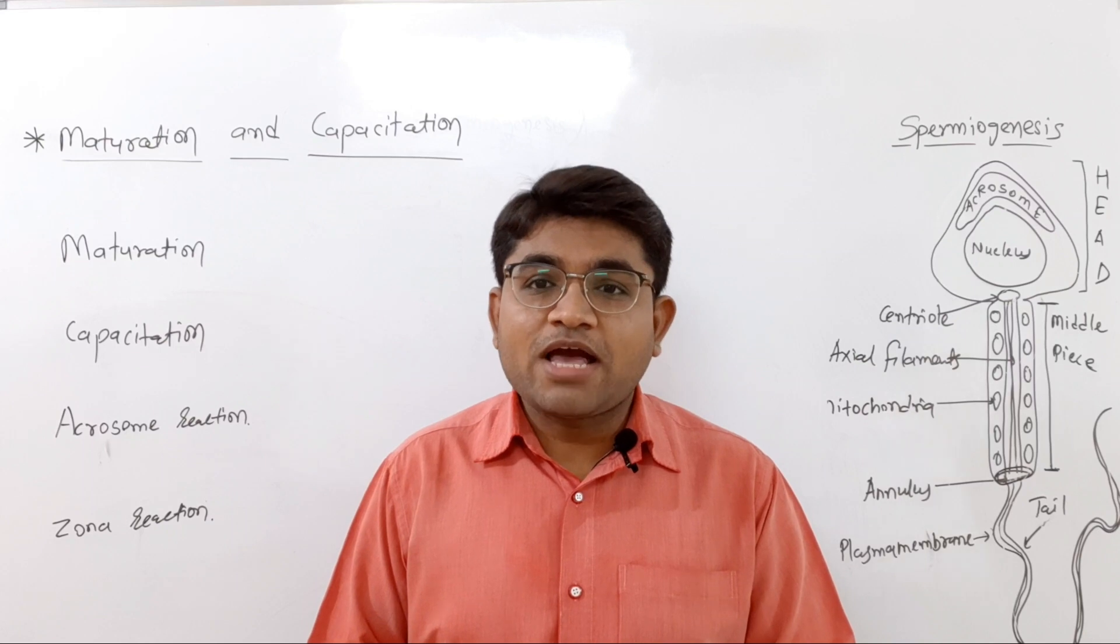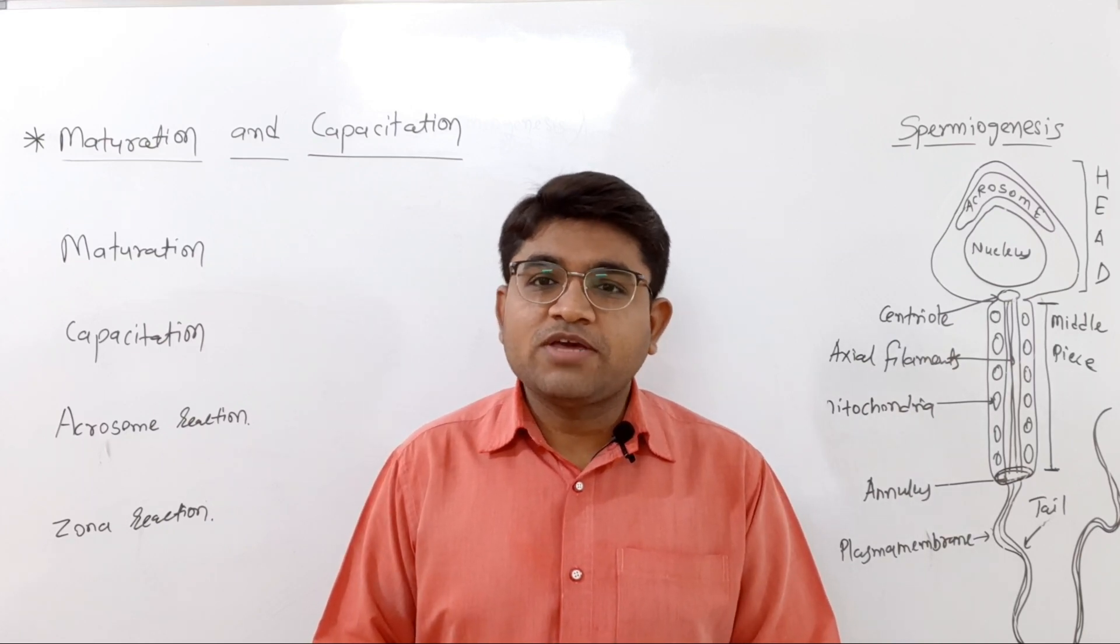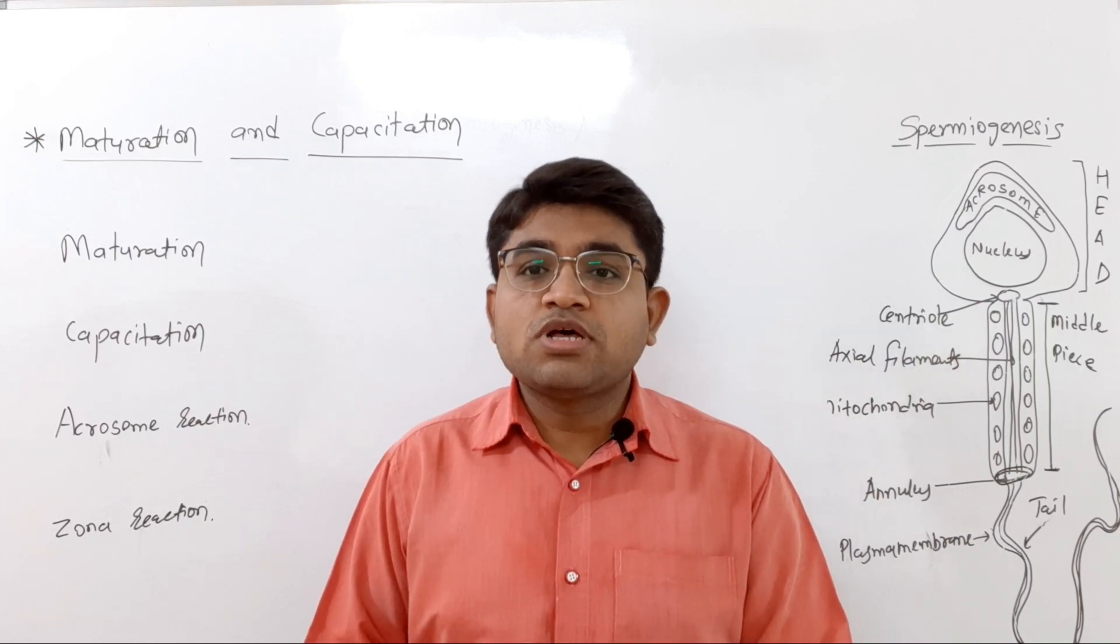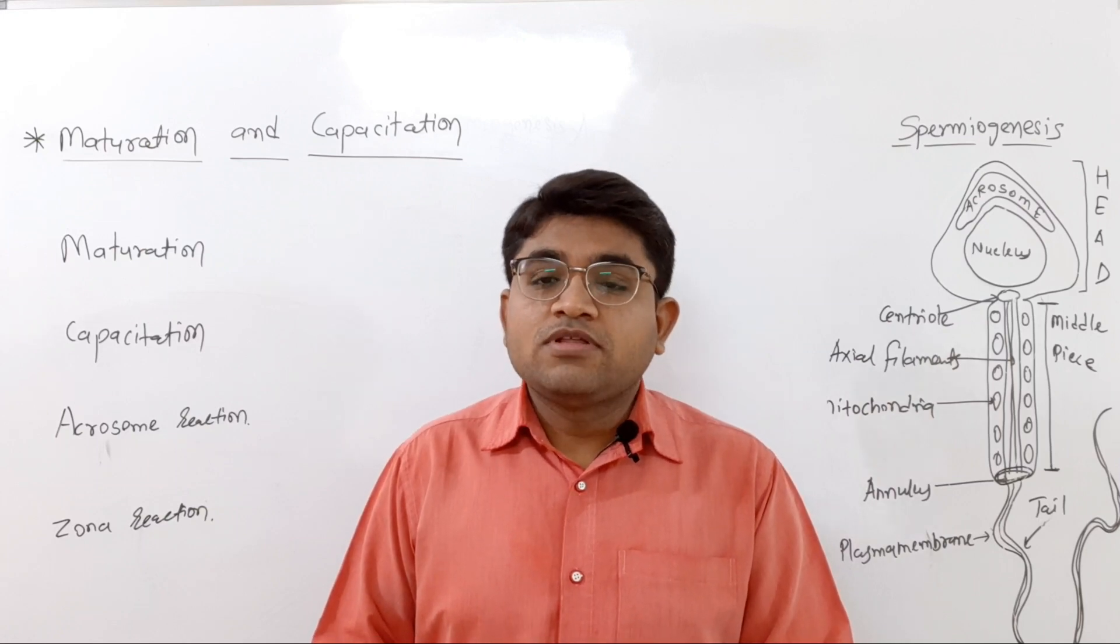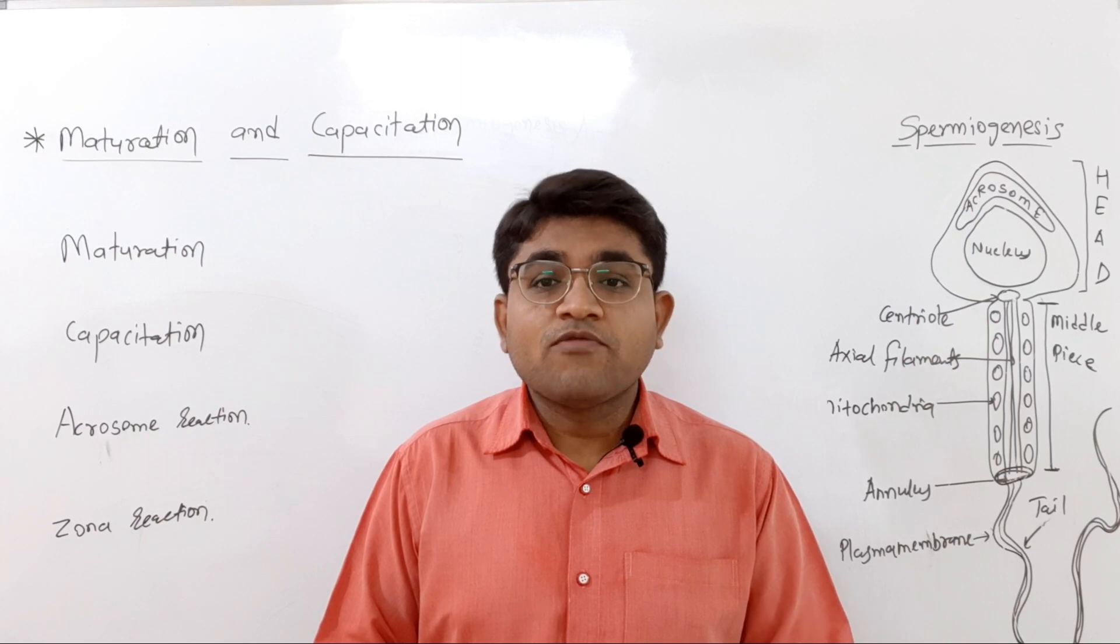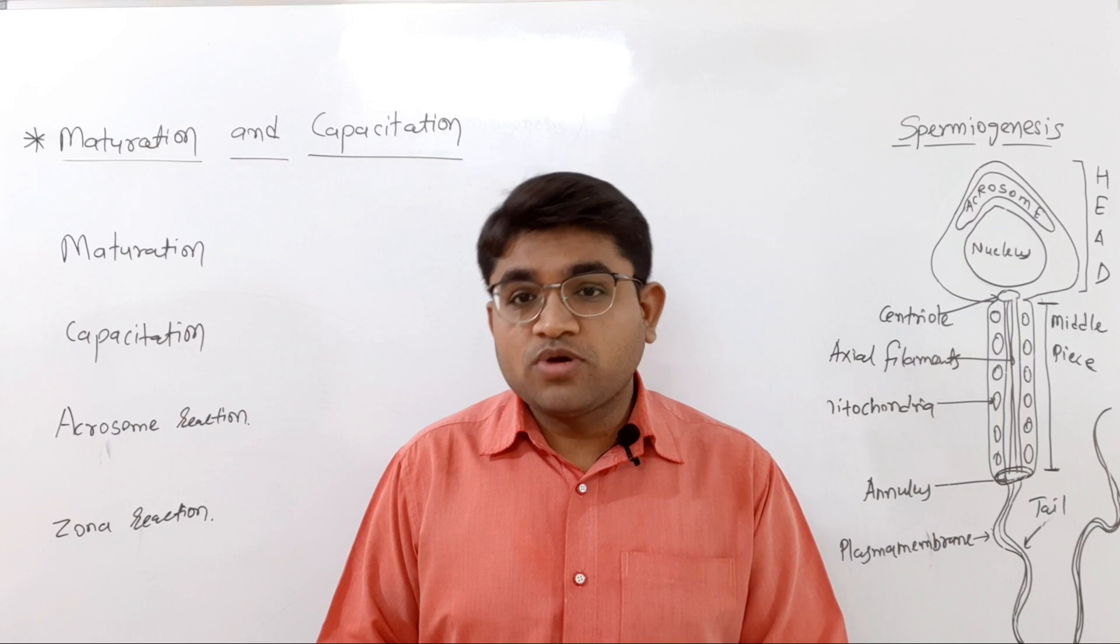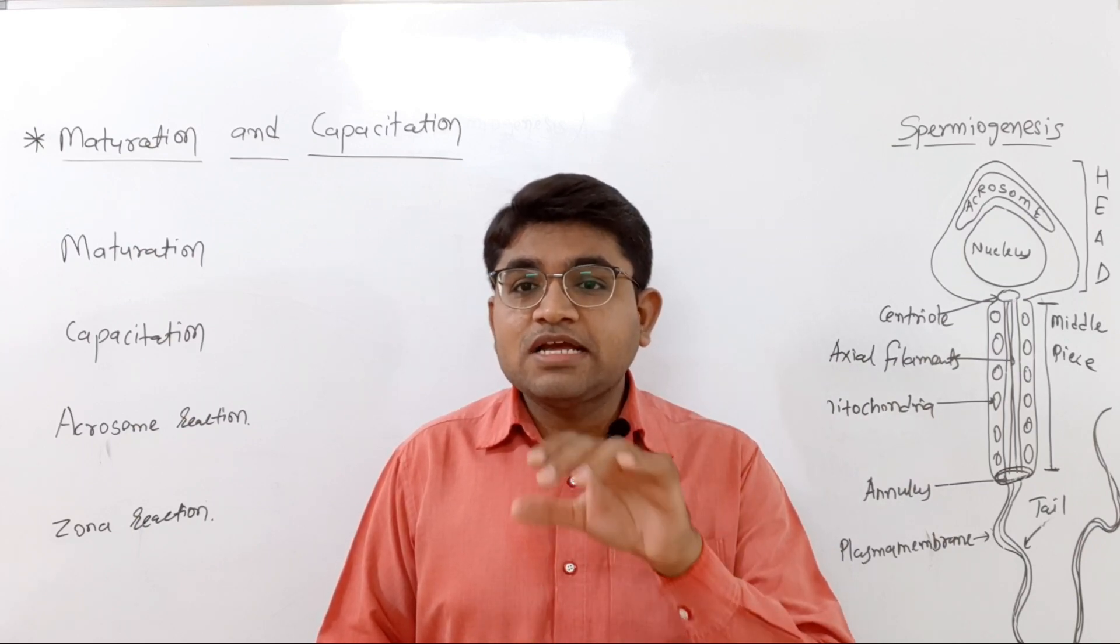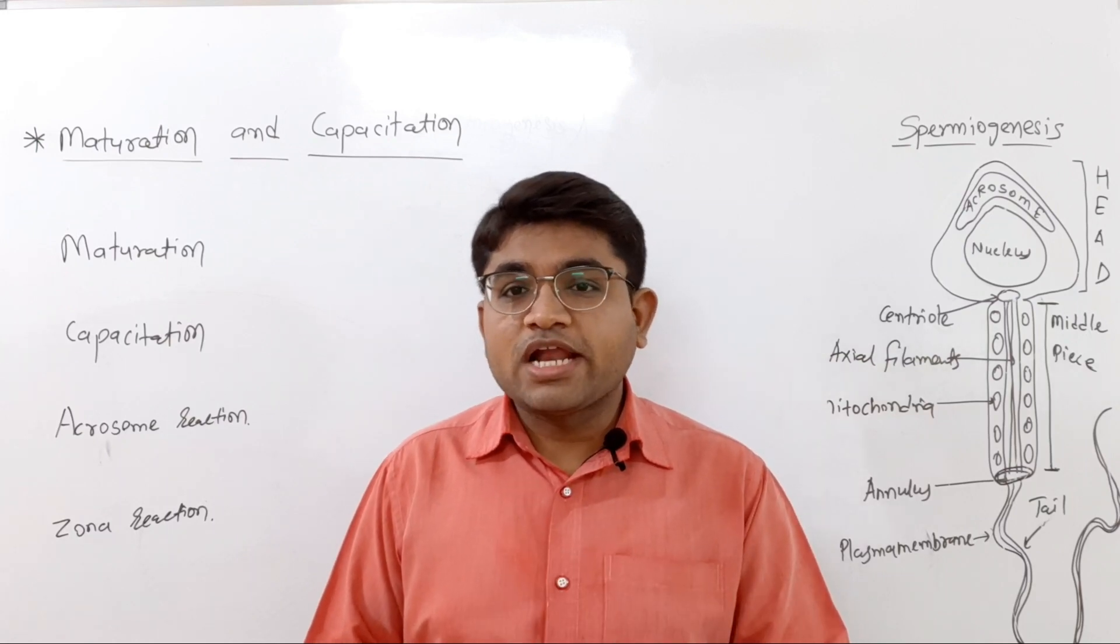The reaction in the acrosomal cap is known as the acrosomal reaction. Some changes also occur on the zonal site. Some enzymes help the zona for penetration and digestion so that the sperm can penetrate the zona. This alteration that occurs in the zona pellucida is known as the zonal reaction.